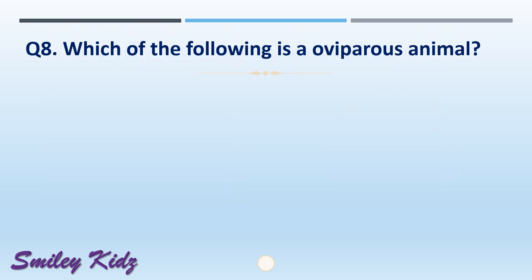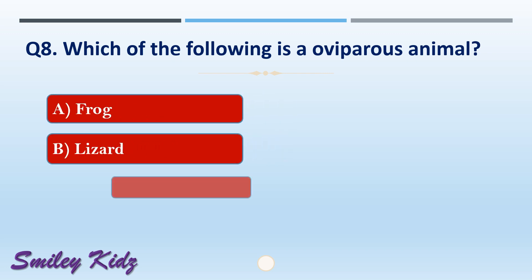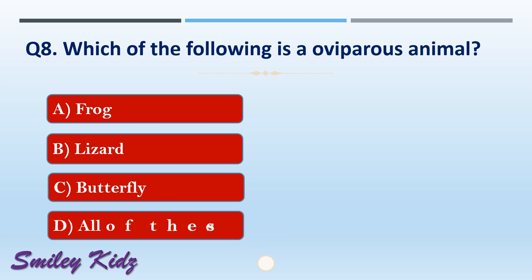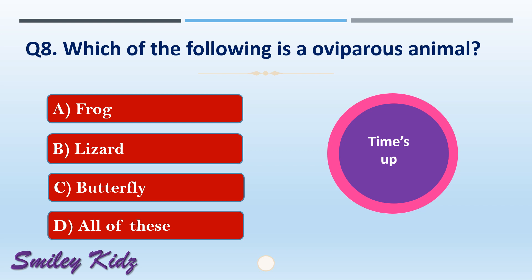Question number eight: which of the following is an oviparous animal? The options are: A) frog, B) lizard, C) butterfly, or D) all of these. The right answer is option D, all of these. Frog, lizard, and butterfly are oviparous animals.